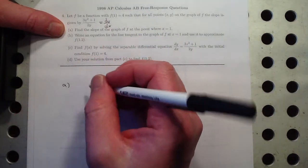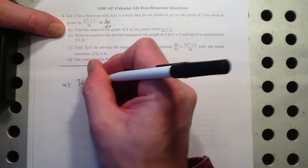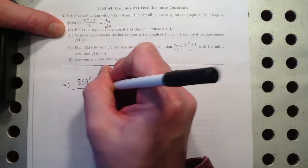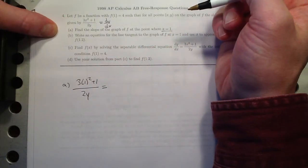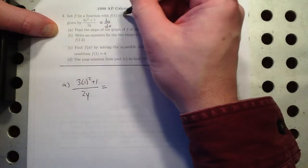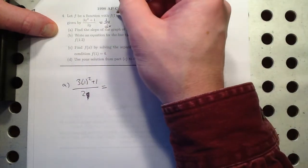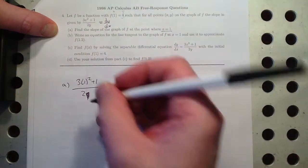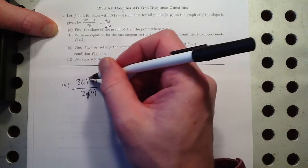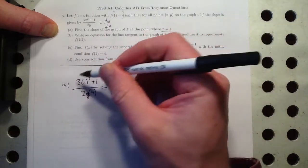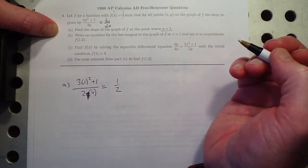Well, let's see if we can do that. f of 1 is equal to 4. So that means, OK, so this is a little bit tricky. So x equals 1, that means we have 3 times 1 squared plus 1 over 2y. I don't know what the y value is, but I do know that, oh no, I do know the y value. I'm making it hard. They told us that f of 1 equals 4. So we know the point 1, 4. So that's 2 times 4. And that would be 3, that's 1 half. 4 divided by 8, 1 half. All right, that was easy.